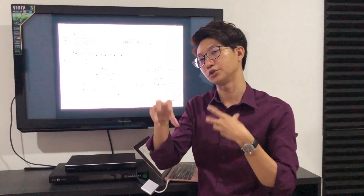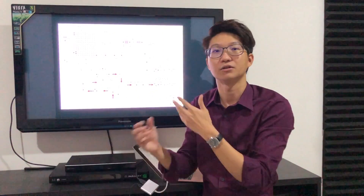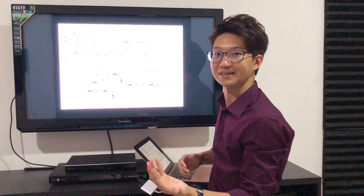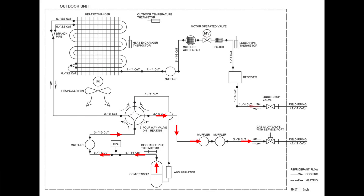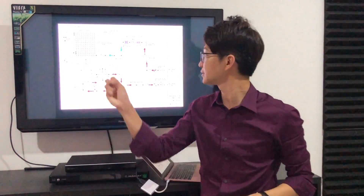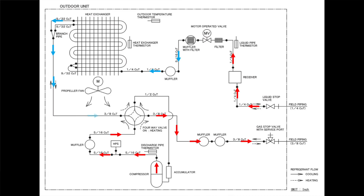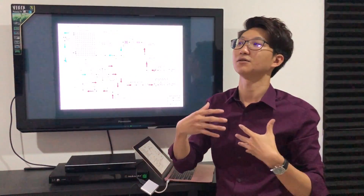When you press the remote controller and switch to heat mode, the same process begins with the compressor producing hot refrigerant gas, but this time the four-way valve turns so that the hot refrigerant gas goes straight to the indoor unit. The indoor unit now undergoes condensation — it becomes the condenser — releasing heat into the room. The refrigerant then comes back, goes through the expansion process, and flows through the outdoor heat exchanger, which now becomes the evaporator. This allows the heat pump to absorb heat from the outdoor ambient air, because the expanded refrigerant is very cold. That is how heating mode works.